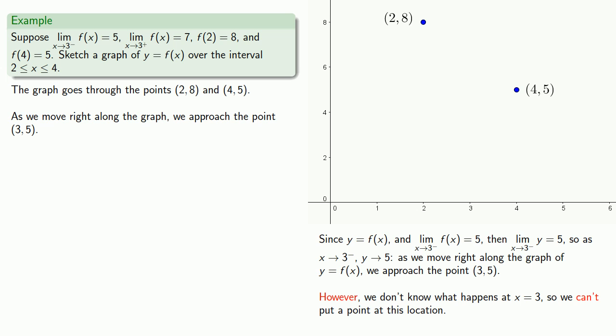Nevertheless, it's convenient to have a target here, so we'll put an open circle at the point (3, 5). That indicates this is not actually a point on the graph, but a place where the graph is moving towards. As x gets close to 3 from below, we make sure our graph approaches that point, and so our graph is going to look something like this.